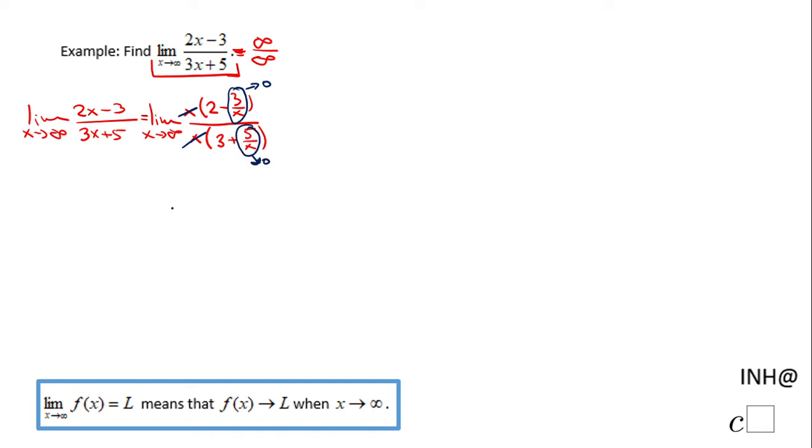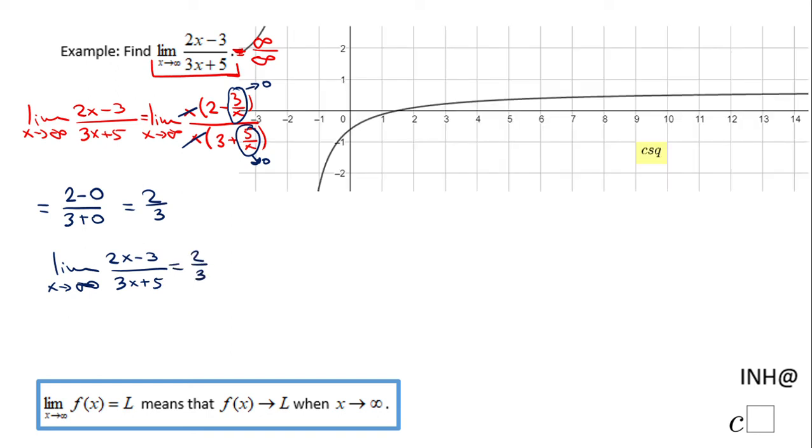So our limit becomes (2 - 0)/(3 + 0), which will be 2/3. The limit as x approaches infinity of (2x - 3)/(3x + 5) is 2/3.